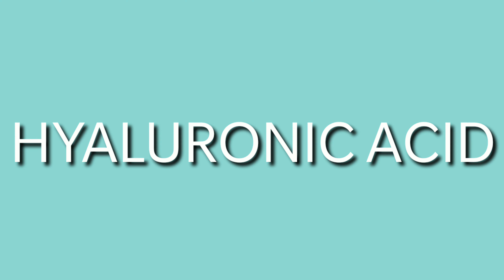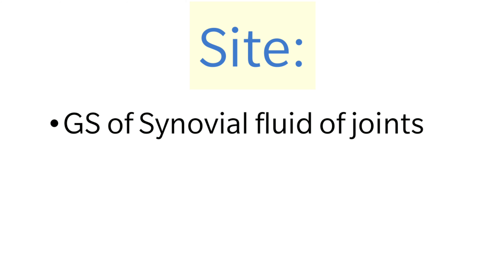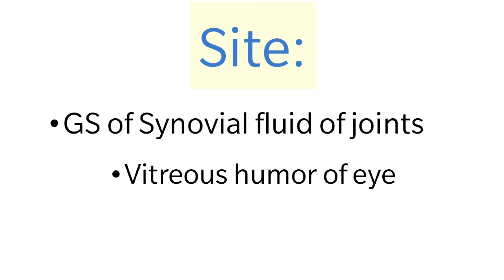Let us now move on to the most important type of GAG: hyaluronic acid. The sites where it is found in our body — first, it is found in the ground substance of synovial fluid of joints, acting as a lubricant. Second, it is found in the vitreous humor of the eye. Third, it is found around the ovum.